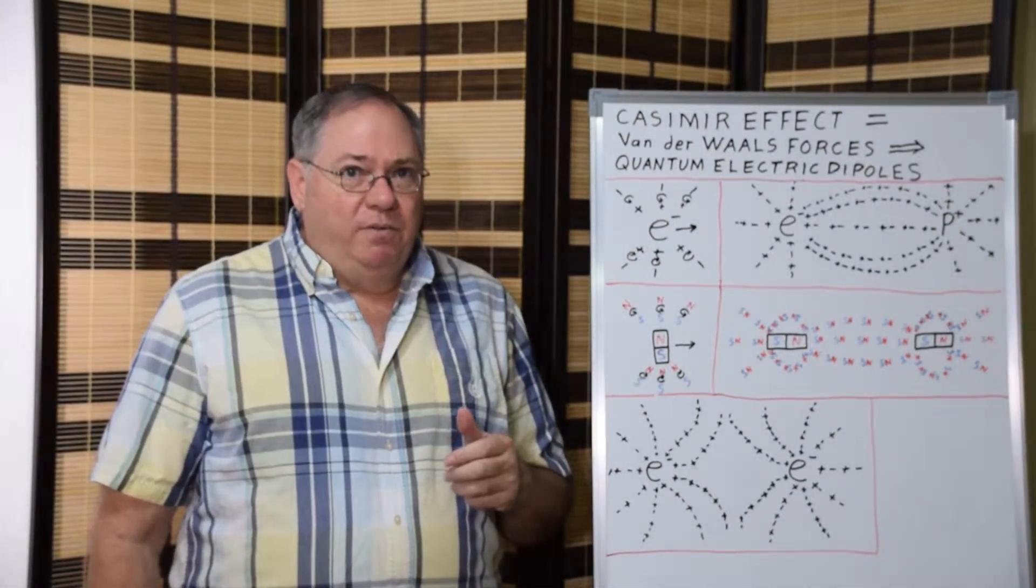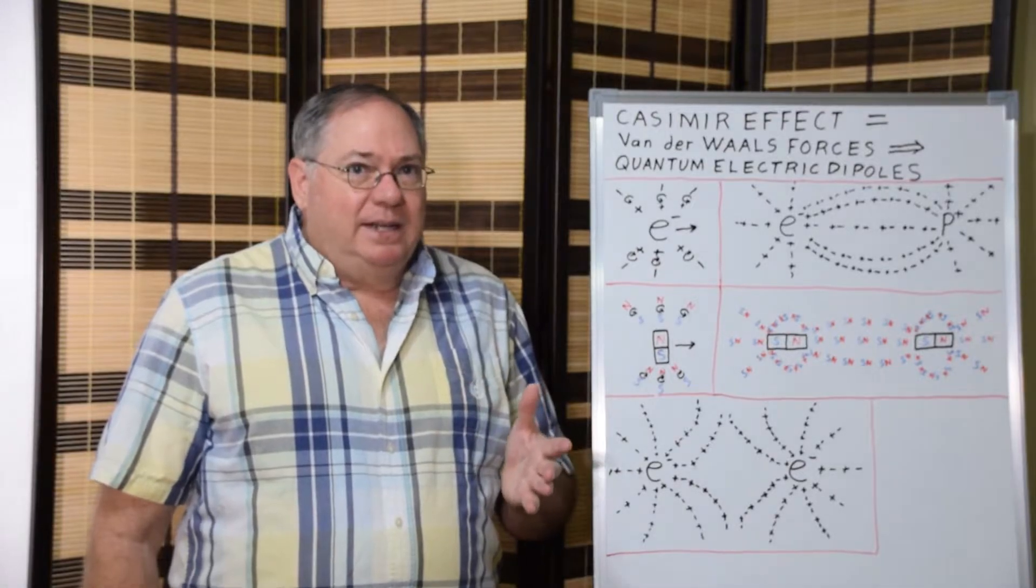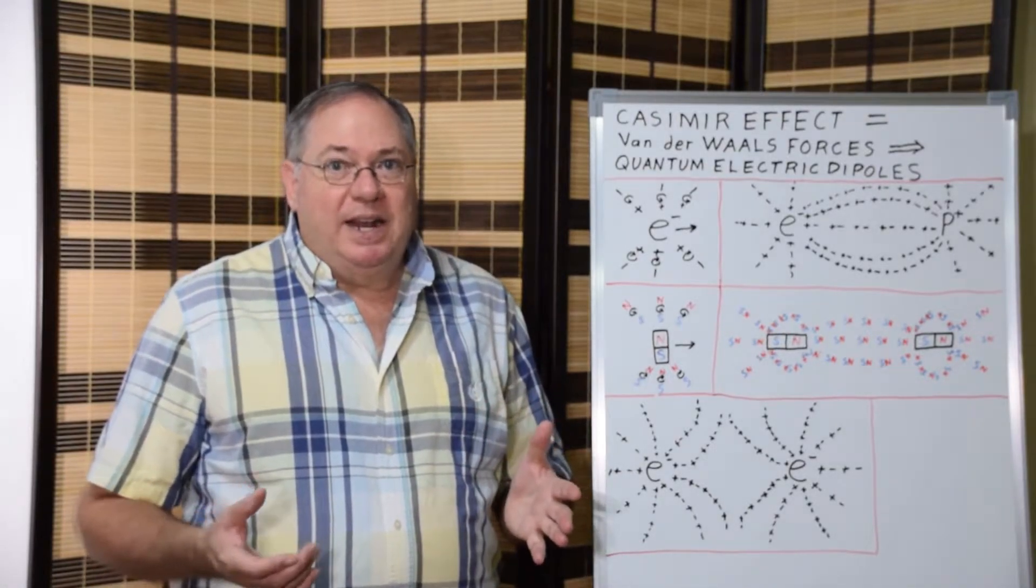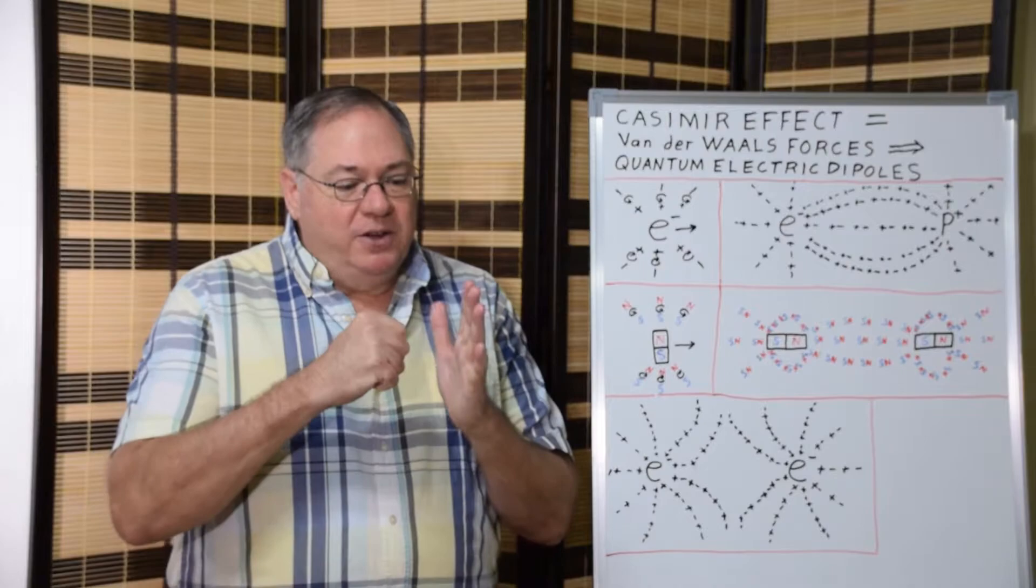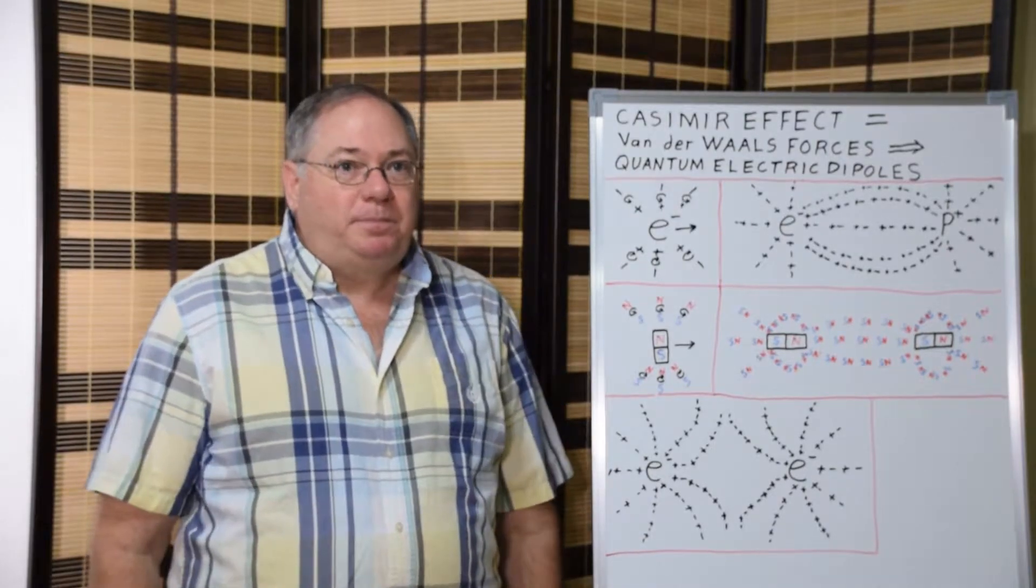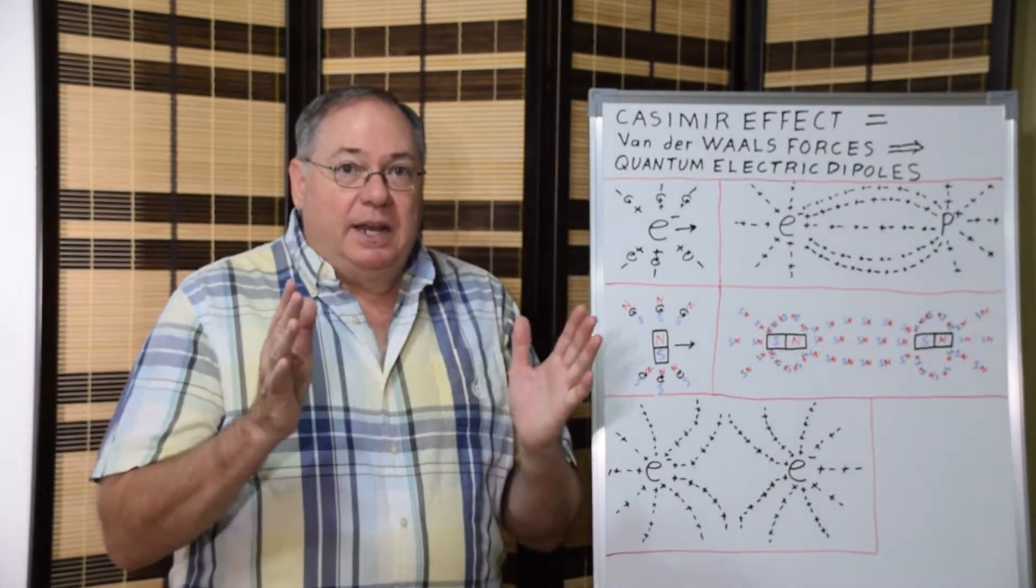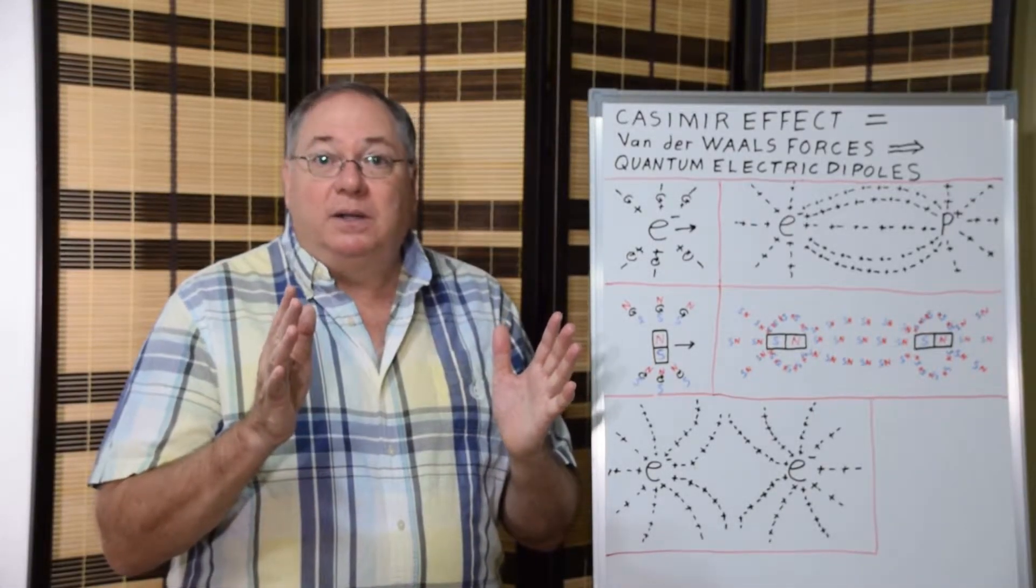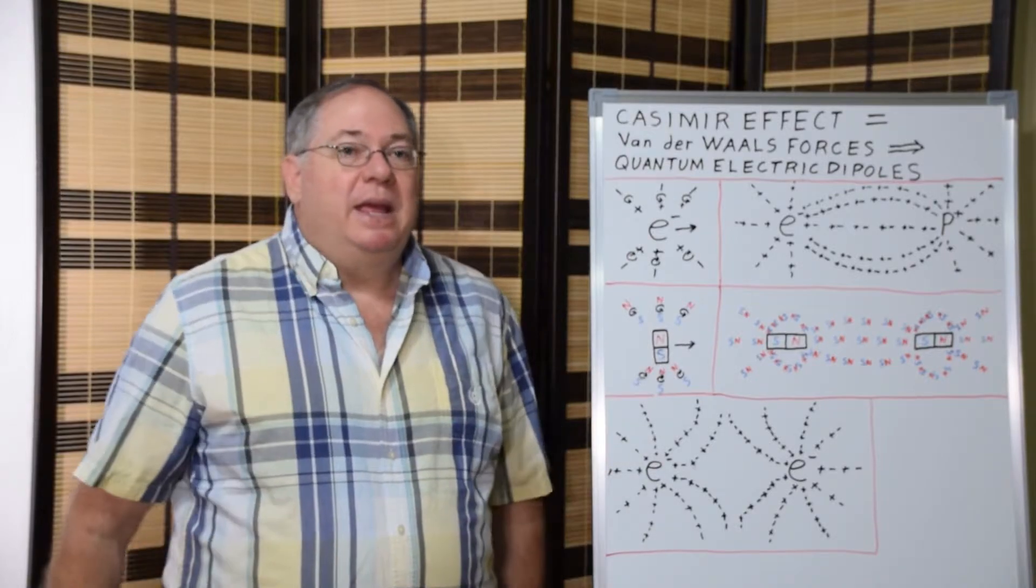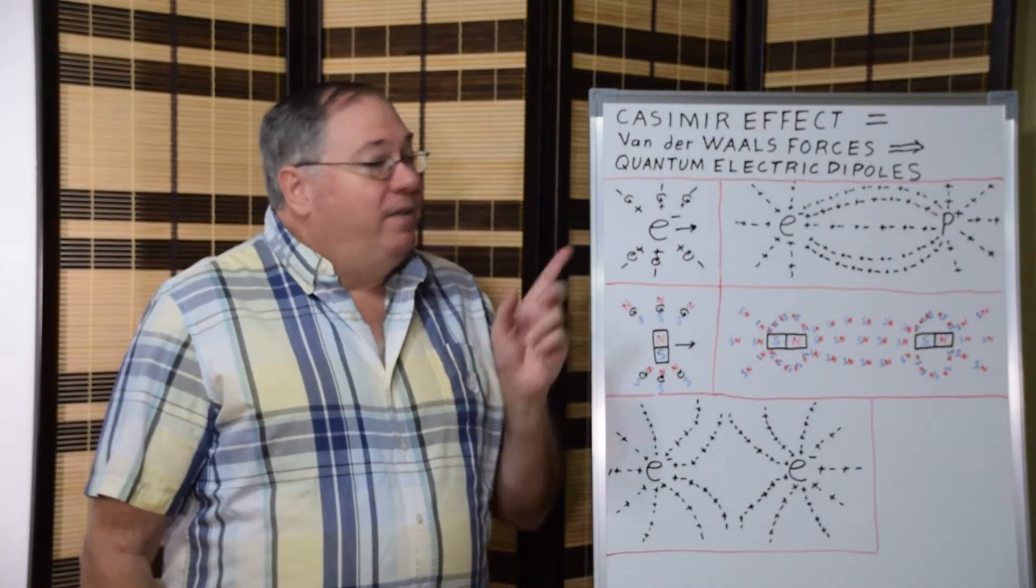Now the effect occurs in a measurable way at about one micron and smaller distances. And it was originally proved in the late 1990s that this was indeed a true effect, although they initially used a sphere and a plate to demonstrate it. And then later they found out that there are geometries that can push plates apart depending on the shape. So the Casimir effect works both ways.